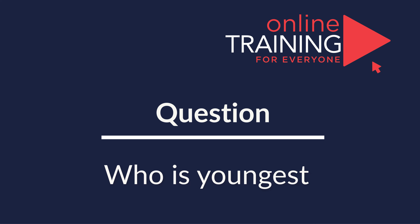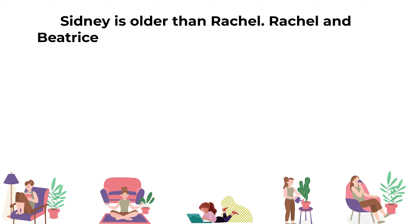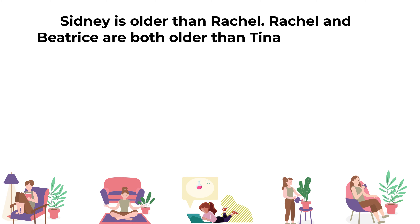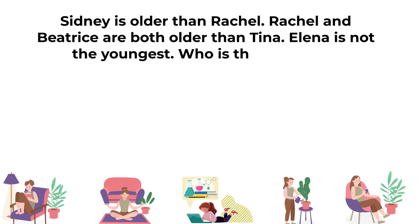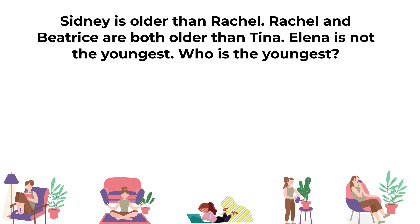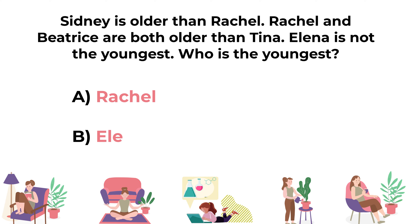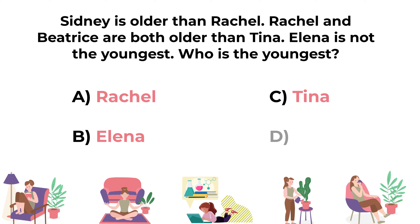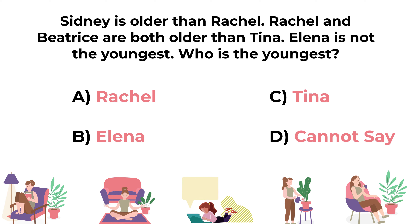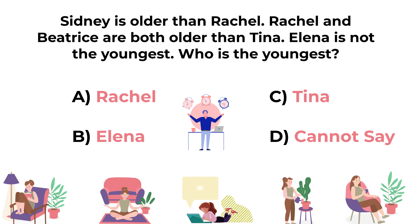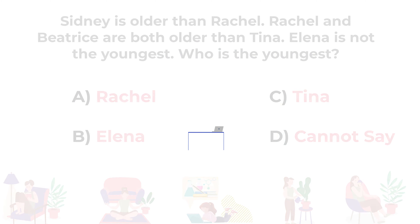Here's one of the questions we frequently see on the test. Sydney is older than Rachel. Rachel and Beatrice are both older than Tina. Yelena is not the youngest. Who is the youngest? Your four choices: A) Rachel, B) Yelena, C) Tina, D) Cannot say. Give yourself a little bit of time to see if you can come up with the solution.